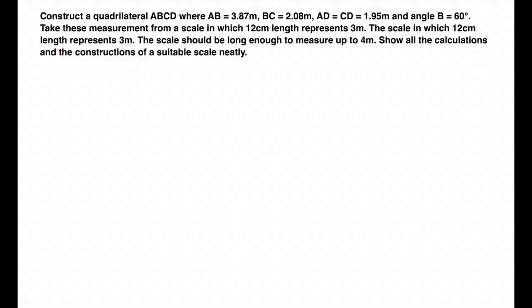Construct a quadrilateral ABCD where AB is 3.87 meter, BC is 2.087 meter, AD equals CD equals 1.95 meter and angle B is equal to 60 degree.